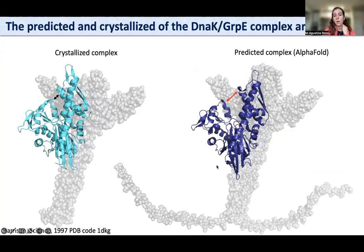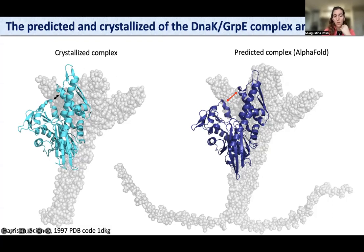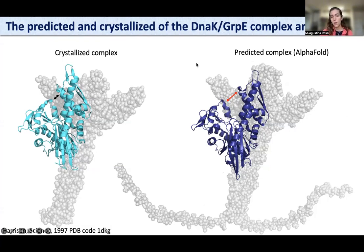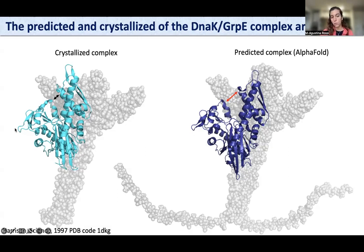To start, we now have AlphaFold available, so the first thing we did was predict the complex between the NBD and full-length GrpE. Here I'm comparing the predicted complex to the crystallized complex. GrpE is a dimer with two N-terminal tails in a coiled-coil formation, two beta-bundles, and four alpha-helices where the NBD interacts with GrpE. The biggest difference between the crystallized and predicted complexes arises in the position of subdomain 2B: in the crystallized complex, subdomain 2B is closer to 1B than in the predicted complex.